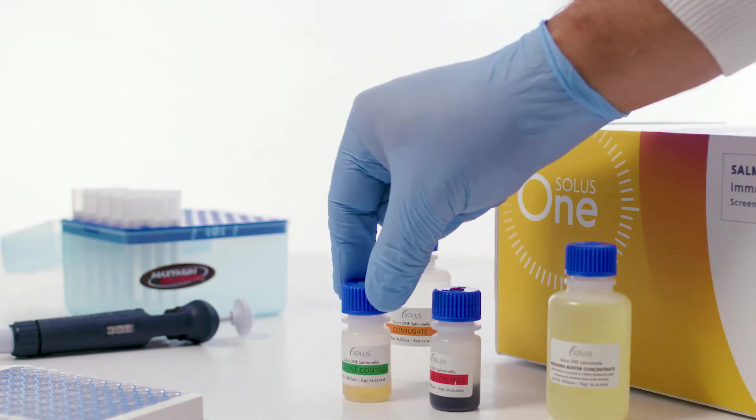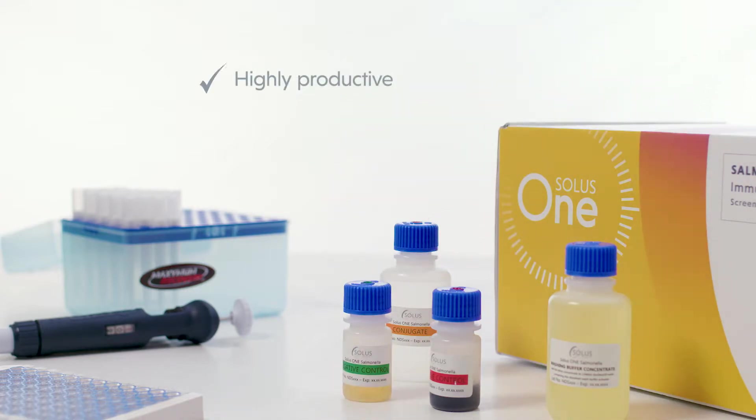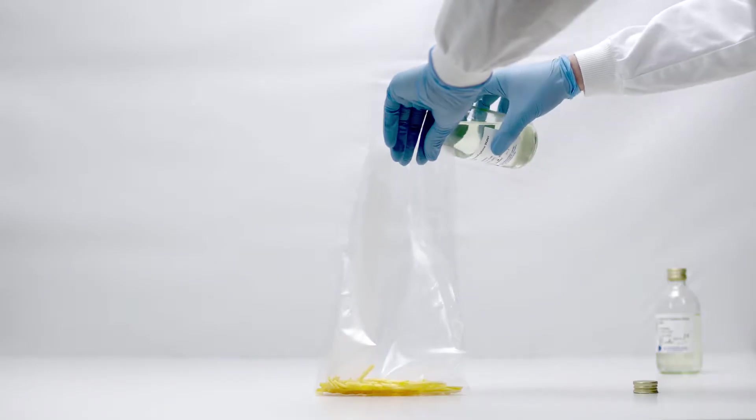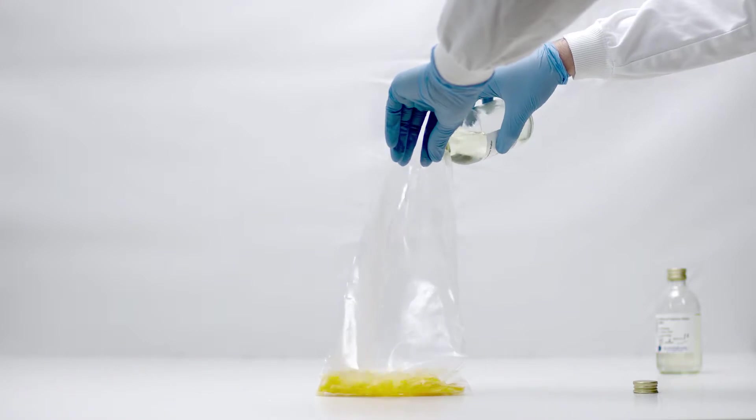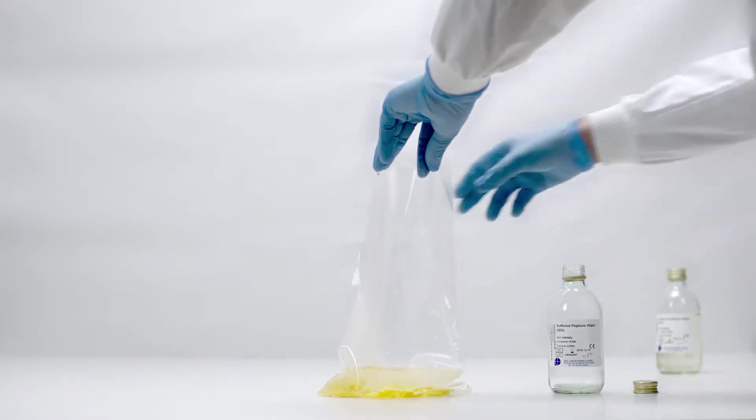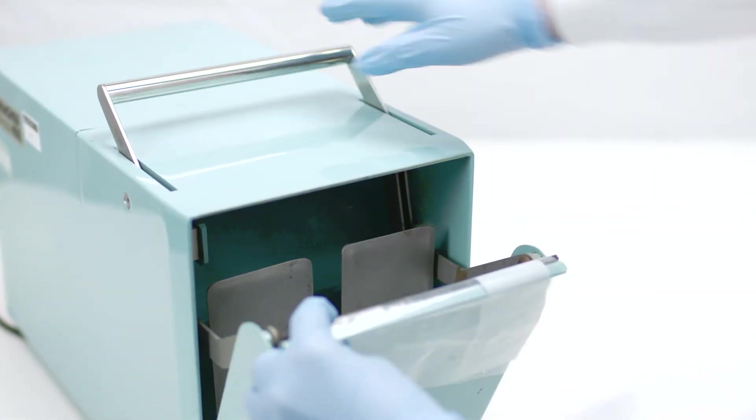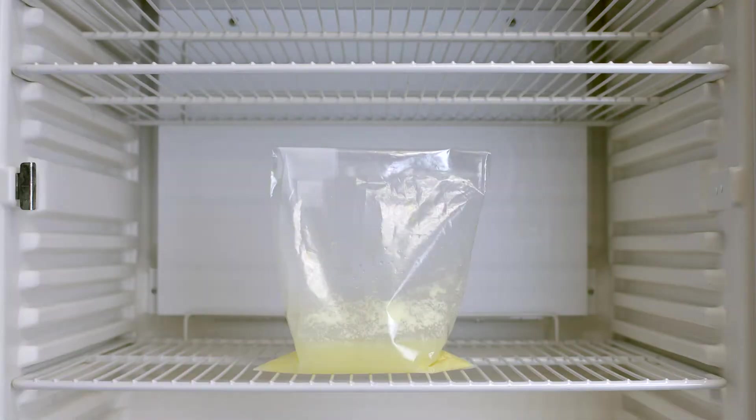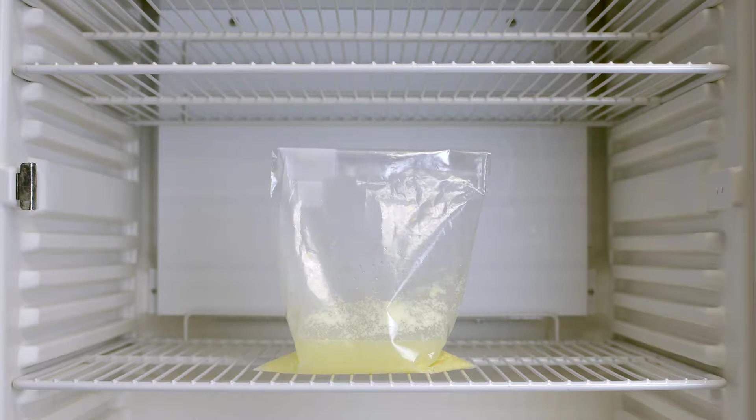In a fast-paced pathogen testing environment, Solus1 delivers the capacity to maximize the use of laboratory resources. The procedure begins with the dilution of the sample into a filter bag containing supplemented BPW, which is then homogenized and incubated at 41.5 degrees C for 20 to 22 hours.